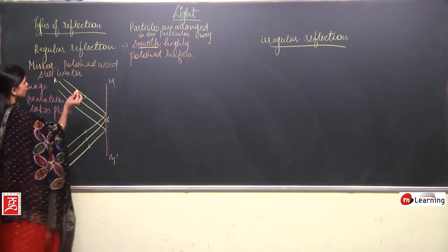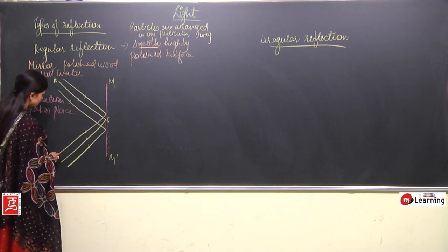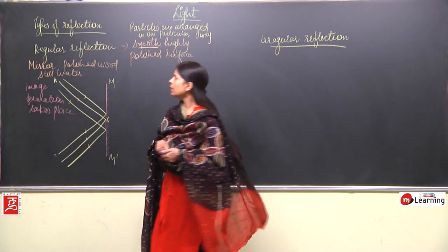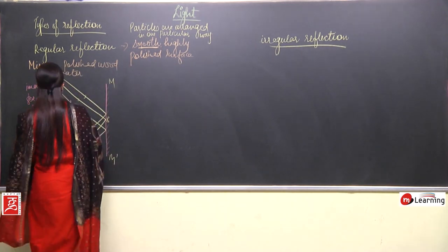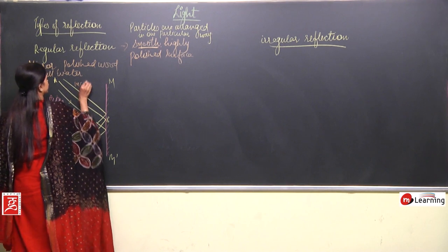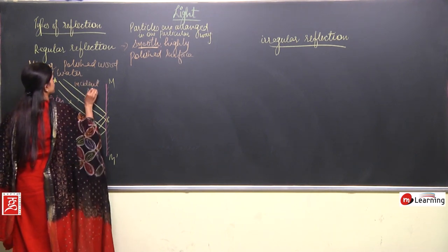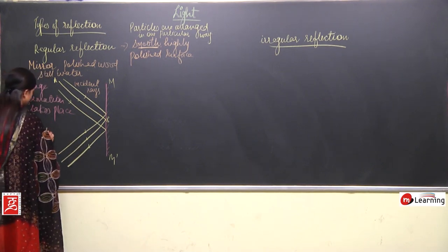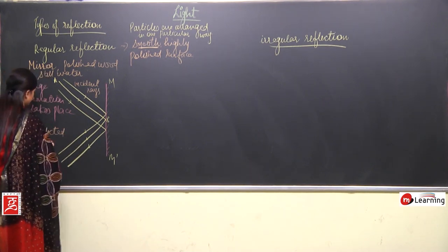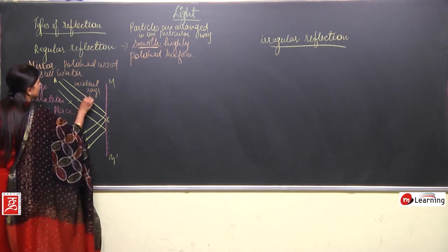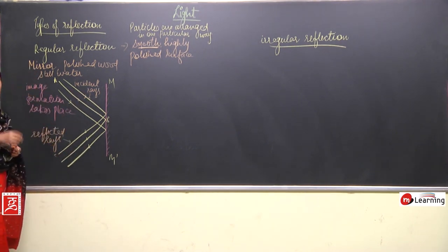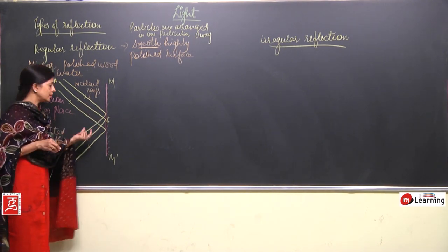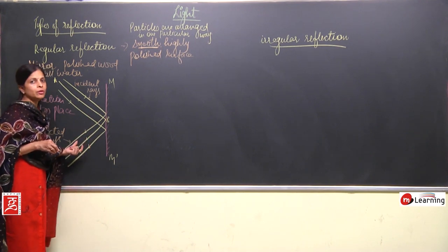We can name all the rays if we want. The main thing is: these are the incident rays, these are the reflected rays. Because the incident angle is the same for all, the angle of reflection is also equal.